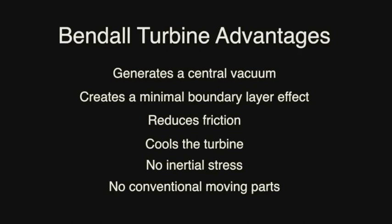A conventional jet turbine blade has a high pressure boundary layer that generates friction and therefore heat whereas the Bendel turbine fire tornado creates a central vacuum which expands out beyond the turbine blades and has the effect of causing the air in front of the Bendel turbine to be sucked into the central vacuum. The vacuum creates a minimal boundary layer effect reducing friction and cools the turbine. The differential expansion doesn't matter on our blades because there is no inertial stress.